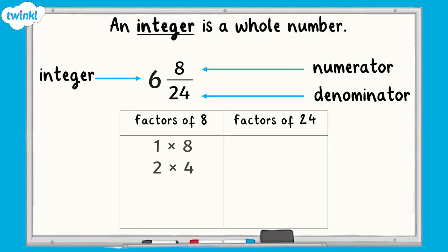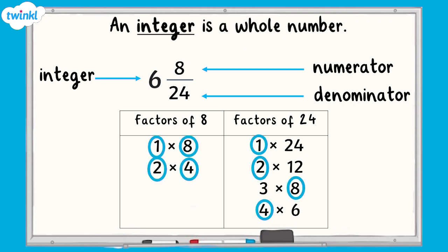The factors of 8 are 1, 2, 4 and 8. And the factors of 24 are 1, 2, 3, 4, 6, 8, 12 and 24. The common factors are 1, 2, 4 and 8. Therefore, the highest common factor of 8 and 24 is 8.